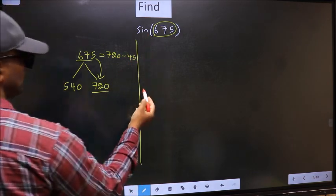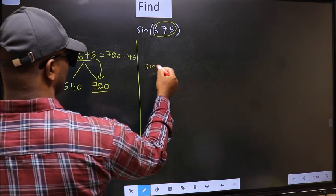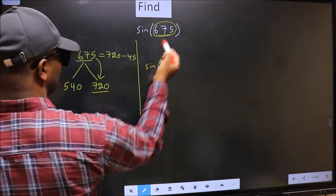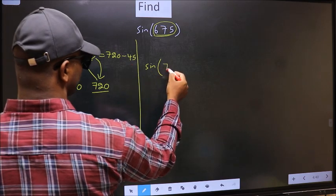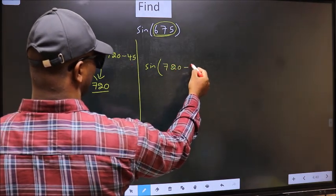So this will become sin in place of 675. Now we should write this 720 minus 45.